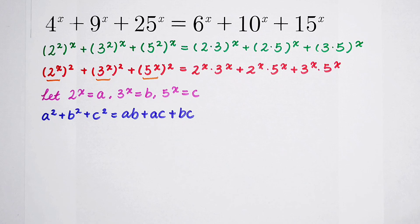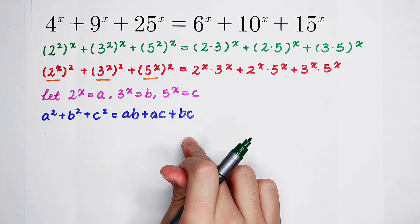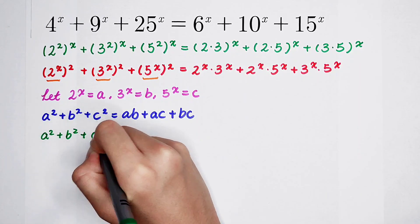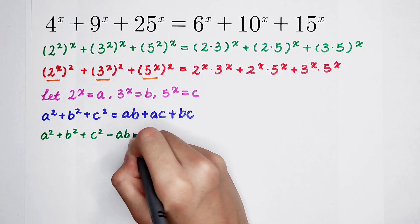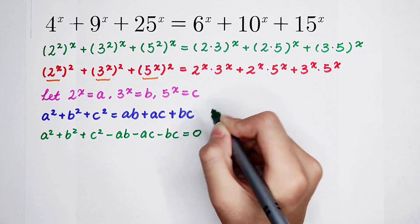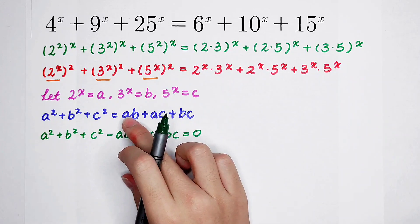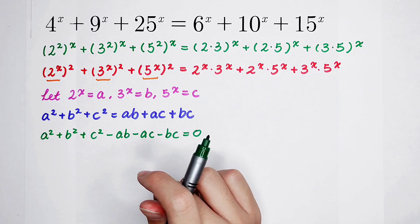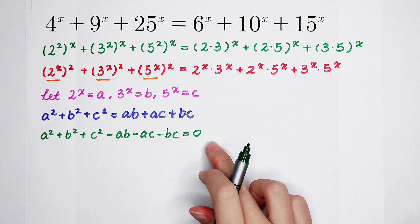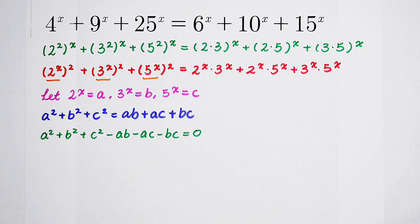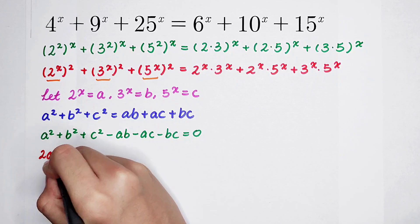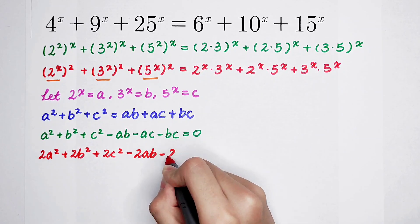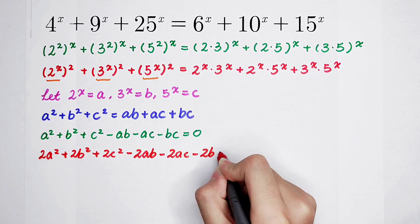The equation becomes A² + B² + C² = AB + AC + BC. So if I subtract AB + AC + BC from both sides and then multiply both sides by 2 — that's the most perfect way — we get: 2A² + 2B² + 2C² − 2AB − 2AC − 2BC = 0.